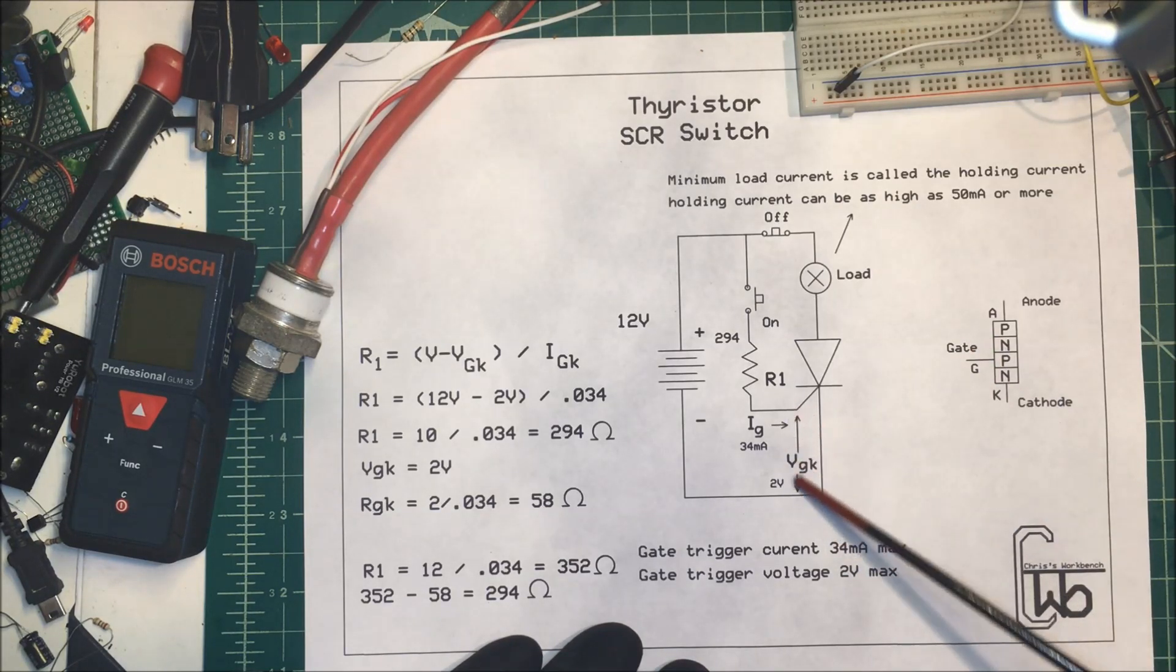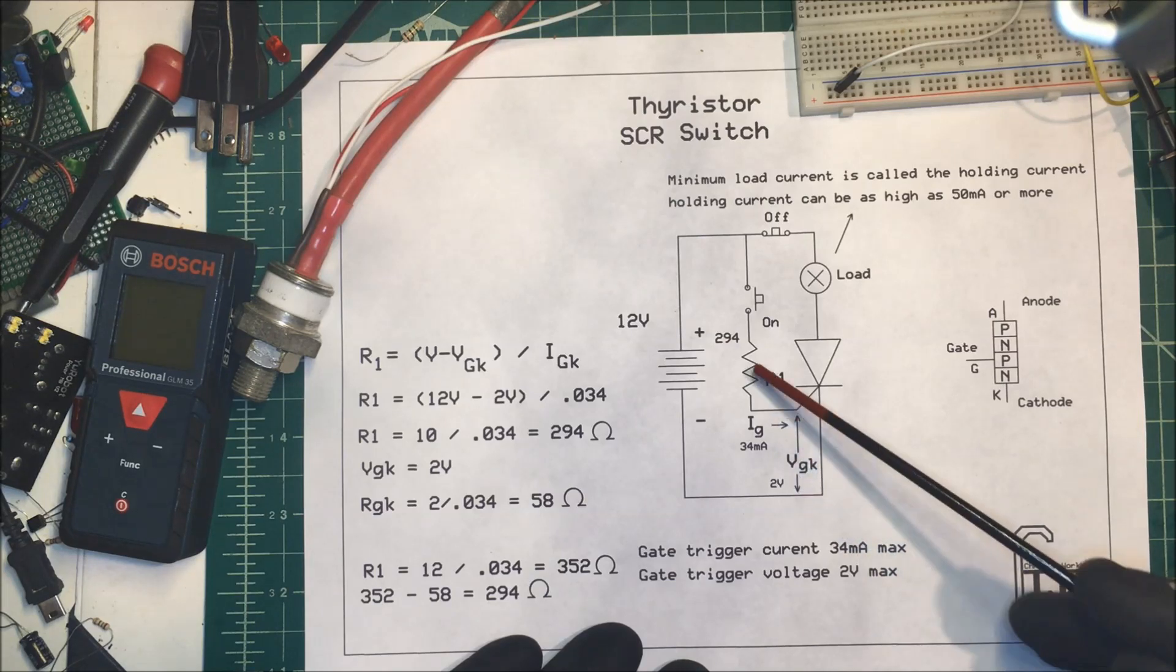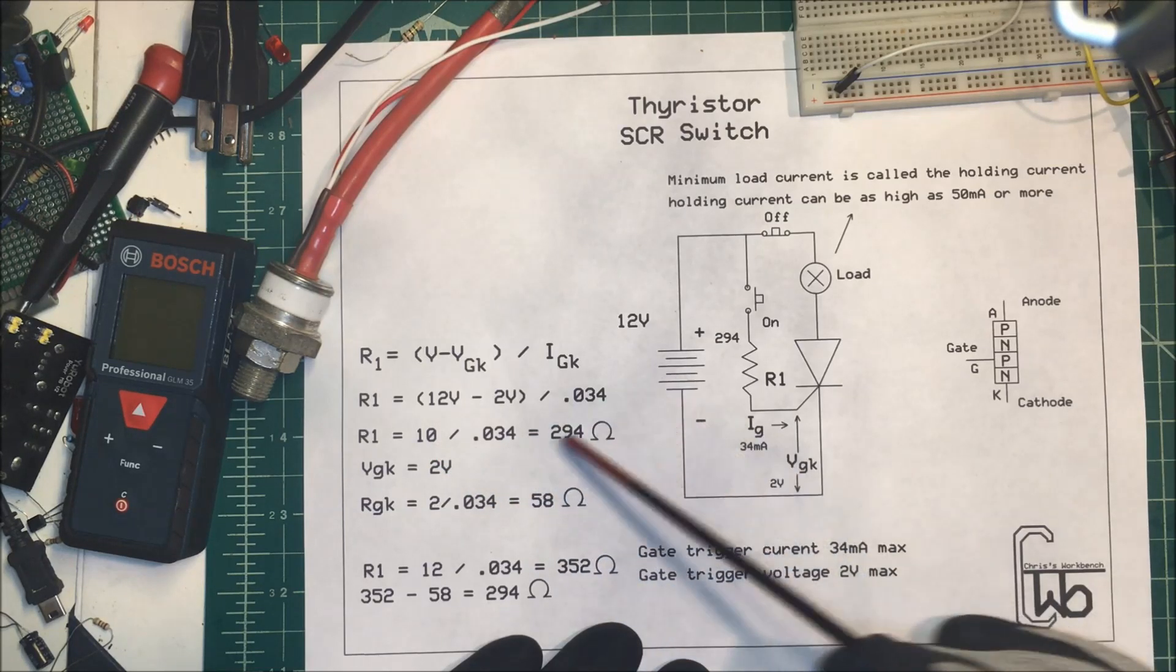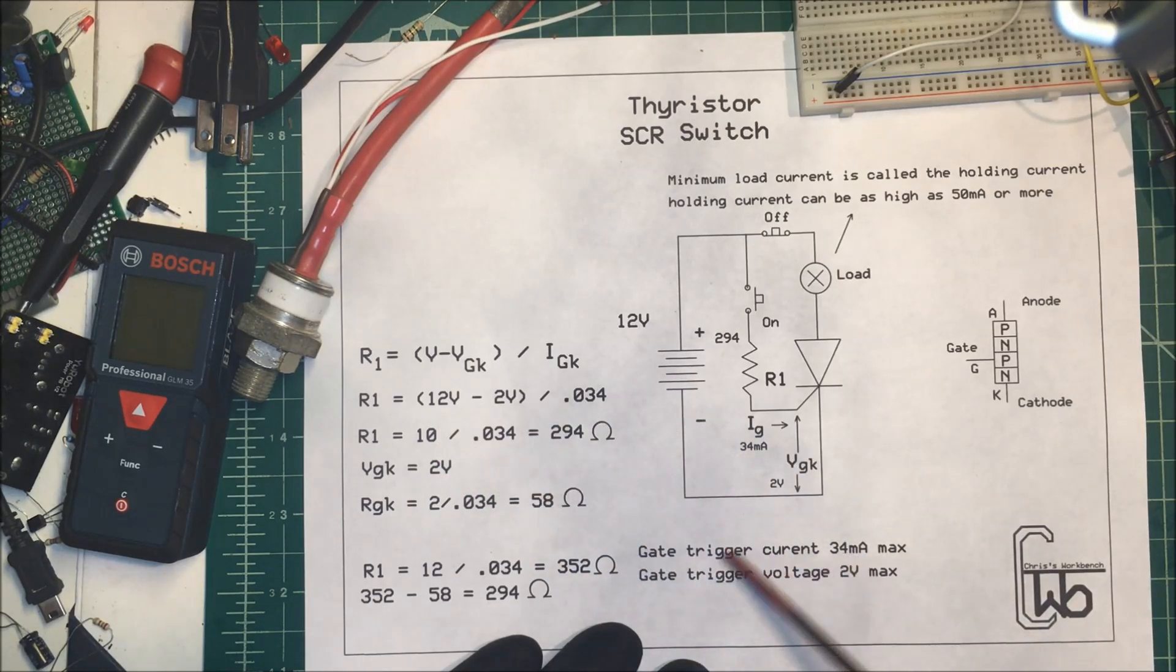That leaves us 10 volts to drop across R1 here. So we take the 10 volts and we divide that by our current of 34 milliamps, and it gives us a resistance of 294 ohms.